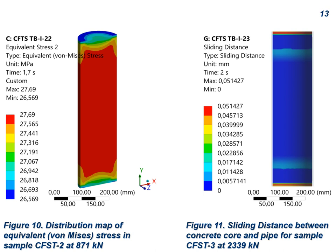In the central part of the CFST element, no displacement of concrete relative to the pipe was observed. As the transition from linear to nonlinear deformations occurred, a gap was observed between the concrete and the pipe, with a value of approximately 0.05 to 0.06 millimeters for the middle part of the CFST element. Before and after this transition, no gap was observed between the concrete and the pipe.